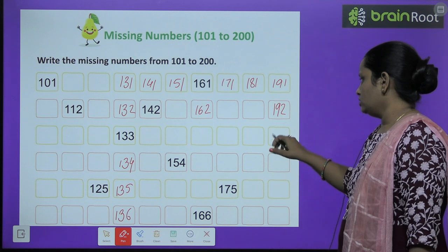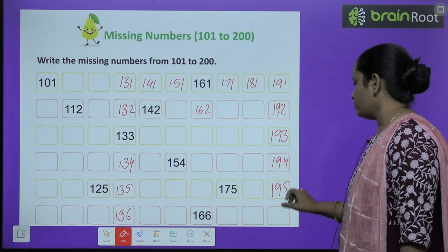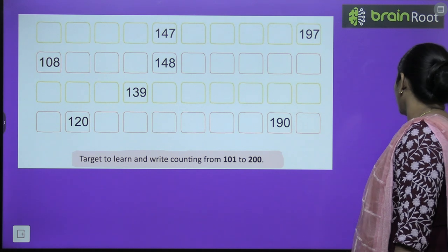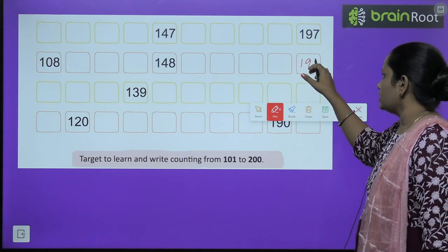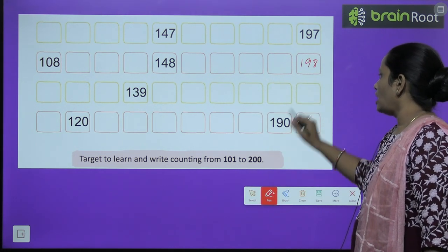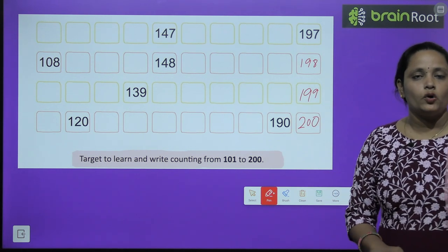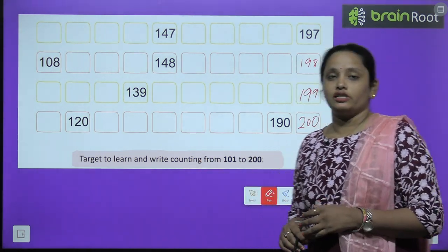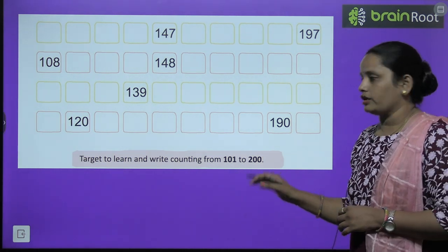191, 192, 193, 194, 195, 196, 197, 198, 199 and then 200. So here you have to fill in the counting in the spaces left, children — the counting from 101 to 200. Is it clear?